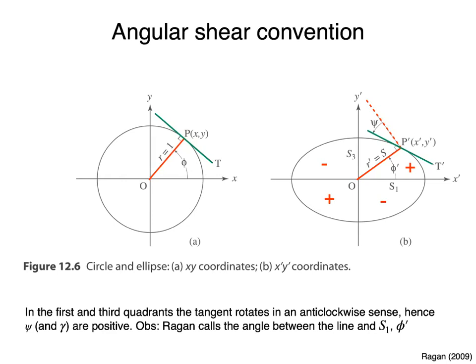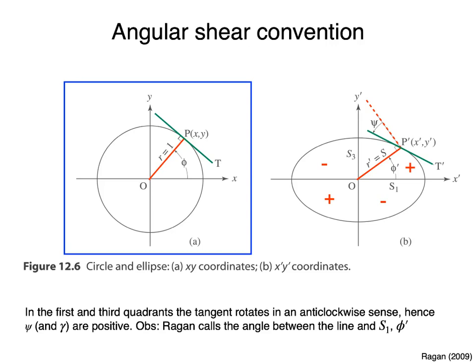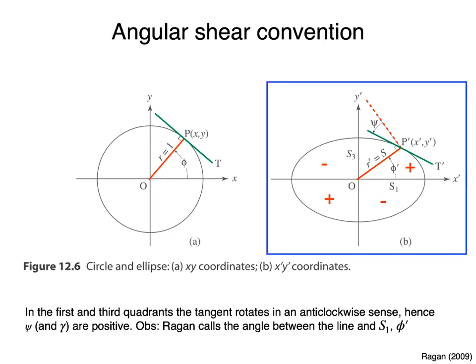First, we need to define a convention for the angular shear. The figure to the left shows a circle of unit radius and a red line within the circle before deformation. The green line is the tangent to the circle, and also the perpendicular to the red line. The figure to the right shows the ellipse after deformation. The green line, or tangent to the ellipse, is no longer perpendicular to the red line, but has rotated anticlockwise an amount psi. Our first convention is that anticlockwise angular shear is positive. Therefore, the angular shear and shear strain are positive in the first and third quadrants of the ellipse, and negative in the second and fourth quadrants.